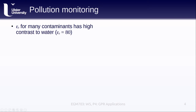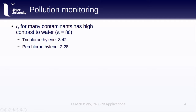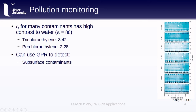The dielectric constant for a number of common pollutants has a very high contrast to the dielectric constant for water. For example, trichloroethylene has a dielectric constant of 3.42, while parachloroethylene (PCE) is even lower at 2.28. Because of this contrast, we can use GPR to detect contaminants in the subsurface, especially if they are replacing water. In the figure here, which shows a controlled spill of PCE, we see a pre-spill reflection in the sand layer, and as the spill progresses, we can see changes in the reflection indicating how the contaminant pools near the boundary then continues moving downward.